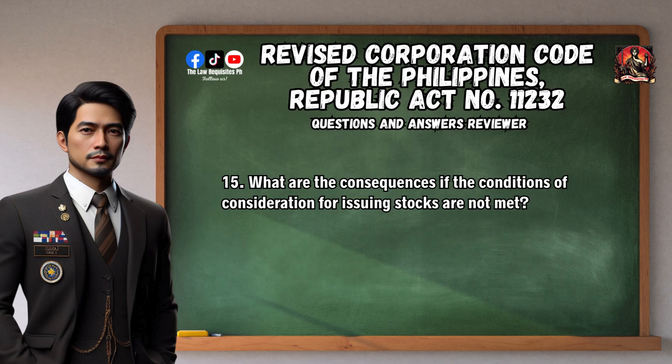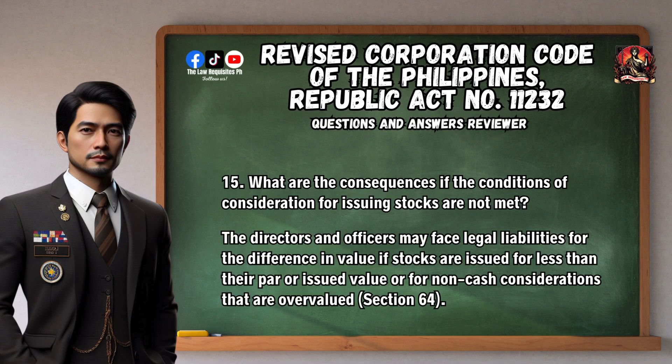Question 15: What are the consequences if the conditions of consideration for issuing stocks are not met? The directors and officers may face legal liabilities for the difference in value if stocks are issued for less than their par or issued value, or for non-cash considerations that are overvalued. Section 64.